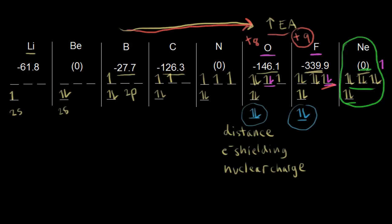Another exception is beryllium — the value of 0 implies you have to add energy for it to accept an electron. It's a similar idea to neon, except the second energy level isn't full — but the 2s orbital is full. So if you wanted to add another electron to beryllium, it would have to go into a higher energy 2p orbital, which is not favorable. Beryllium already has a stable electron configuration and doesn't want an electron.